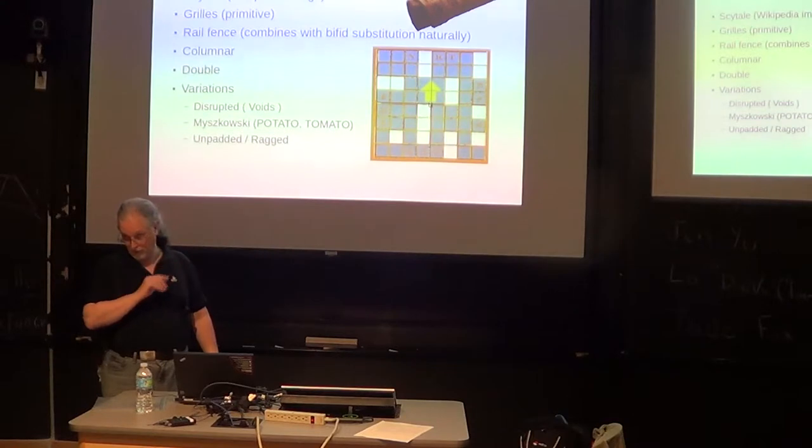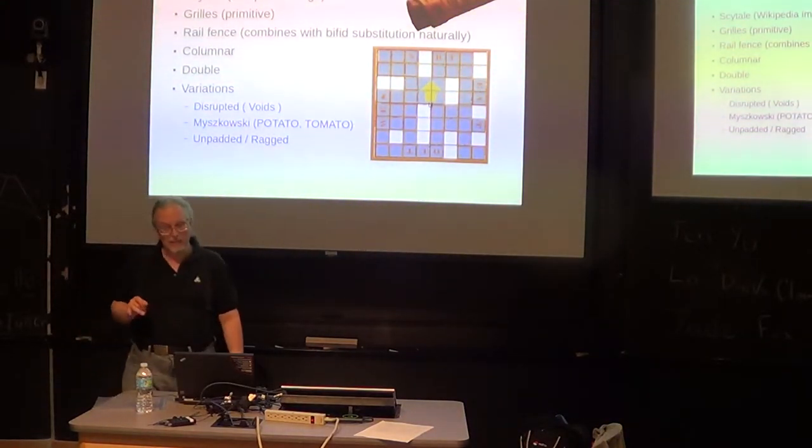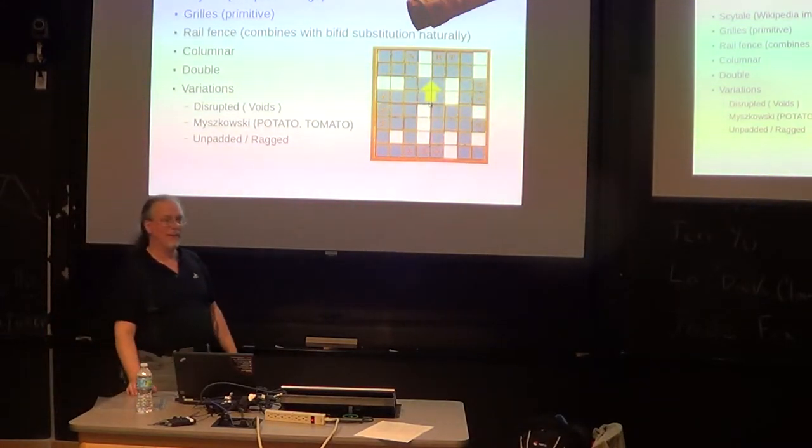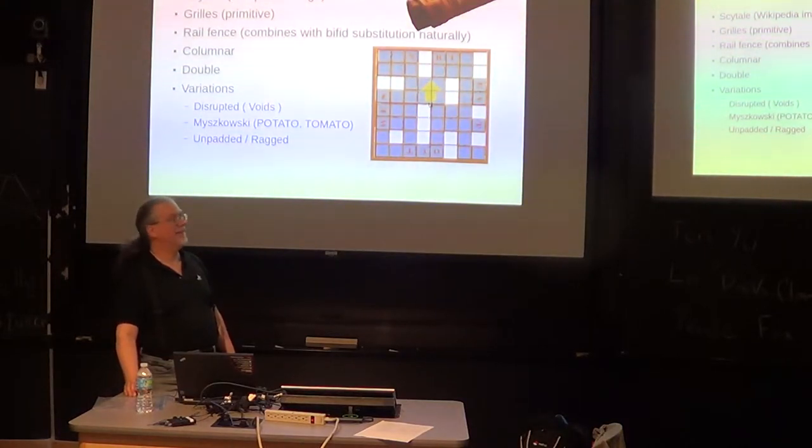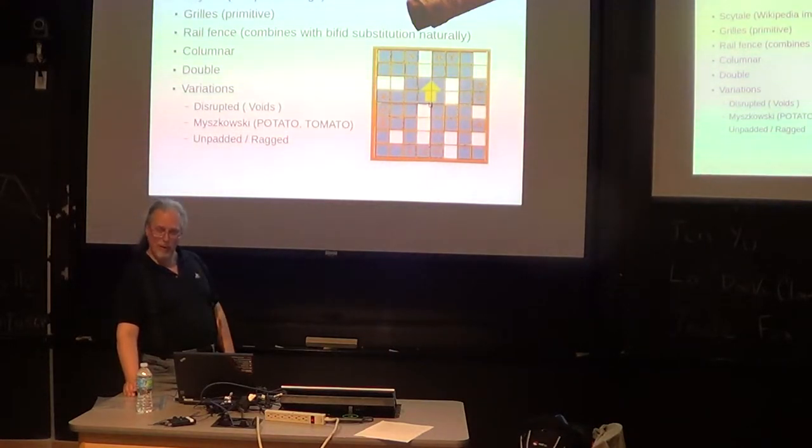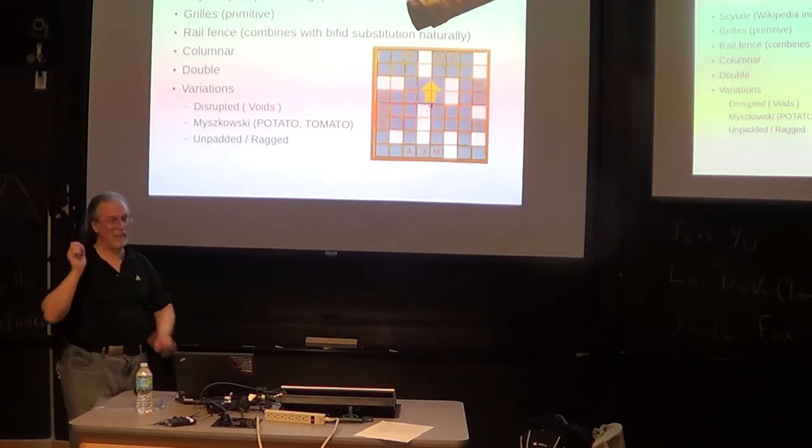But there are no pencil and paper ciphers that will stand up to somebody with even a cheap computer. Solitaire is like the only pencil and paper cipher that has a chance of standing up to a rigorous opponent. And your chances of executing Solitaire correctly are about as likely as you're getting correct typing of all the characters of an 11 word passphrase to get your 100 bits of entropy correctly the first time.